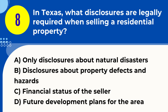Question 8. In Texas, what disclosures are legally required when selling a residential property? A. Only disclosures about natural disasters. B. Disclosures about property defects and hazards. C. Financial status of the seller. D. Future development plans for the area. Answer: B. Disclosures about property defects and hazards. Explanation: Texas law requires sellers to disclose known defects and hazards about the property being sold.